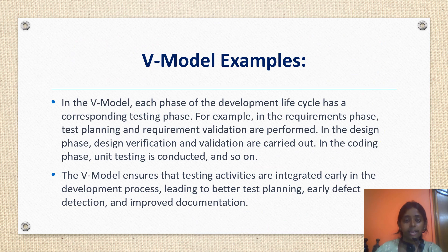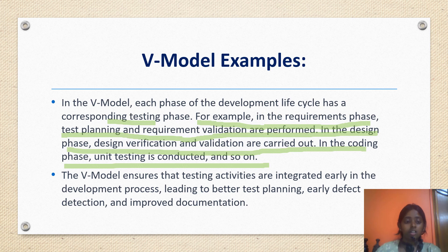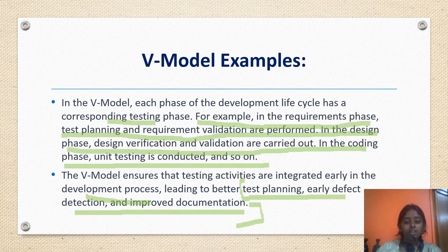Moving on to V model examples: in the V model, each phase of the development life cycle has a corresponding test phase. In the requirement phase, test planning and requirement validation are performed. In the design phase, design verification and validation are carried out. In the coding phase, unit testing is conducted, and so on. The V model ensures that testing activities are integrated early in the development process, leading to better test planning, early defect detection and improved documentation — these are the advantages of the V model.